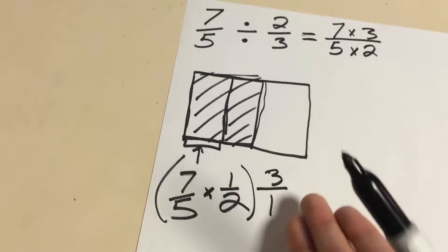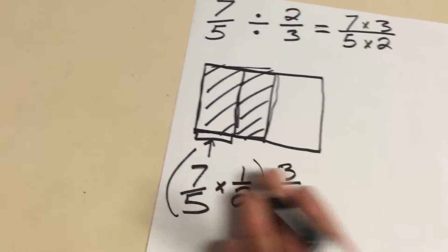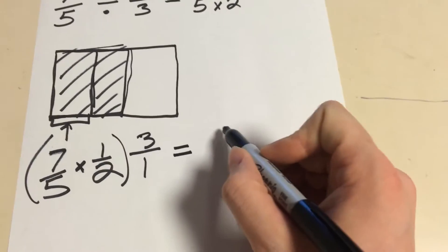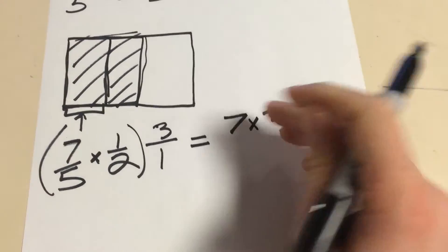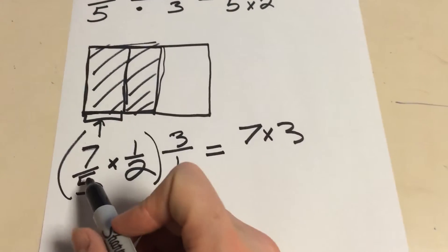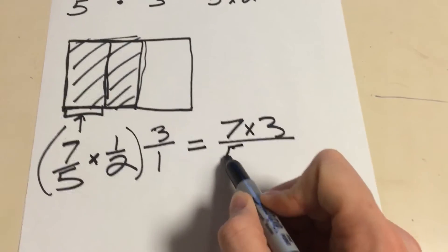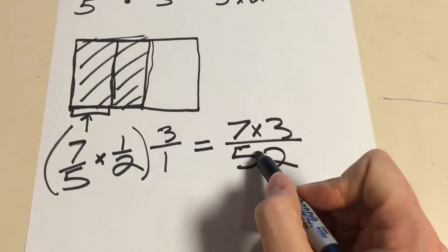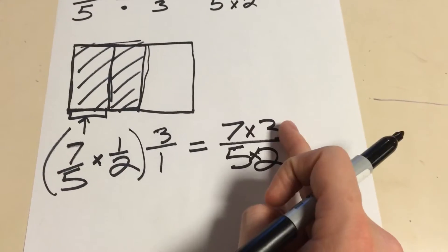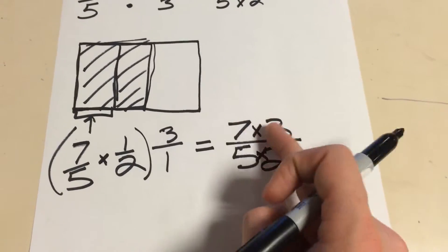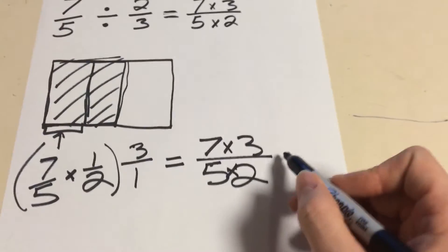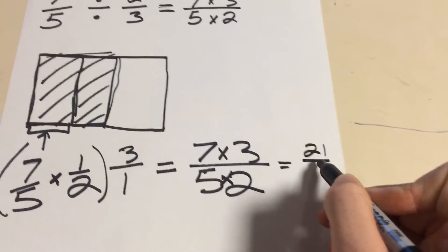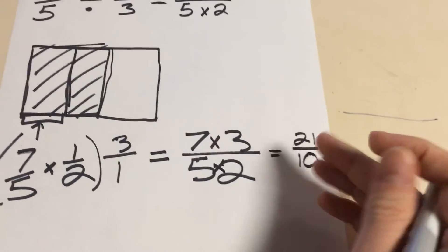So this is essentially what our final answer will be, but we're going to simplify it. It equals 7 times 3, because 3 times 1 is 3, over 5 times 2. 7 times 3 over 5 times 2. That is our final solution. You can simplify it even further and you'll wind up with 21 over 10. But for now, that's all we need to do, because that is how much goes within an entire whole.